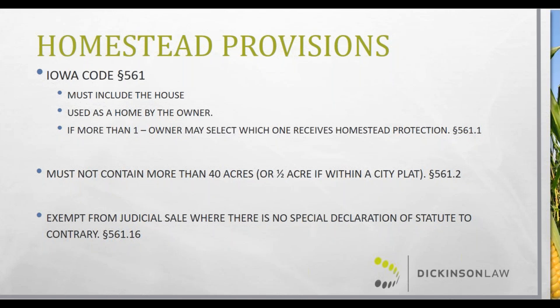Homestead applies under Iowa Code section 561. It must include a house used as a home by the owner. If you have more than one home, the owner can designate which property is protected. The owner can also include beneficiaries of a trust, so it isn't just individuals — it can be held in a family trust and still act as a homestead. The size limitations are 40 acres or more for ag property, and a half acre or less if within a city plat.